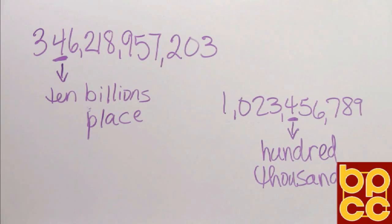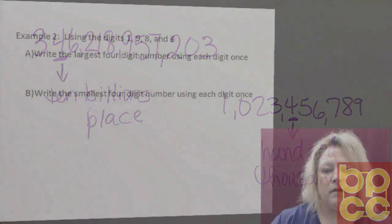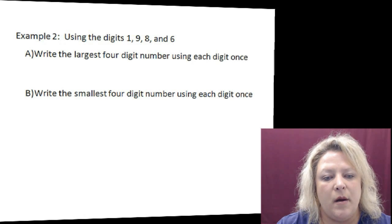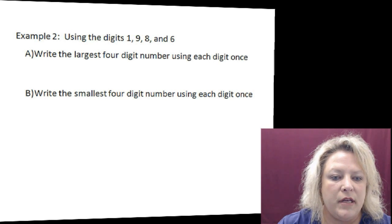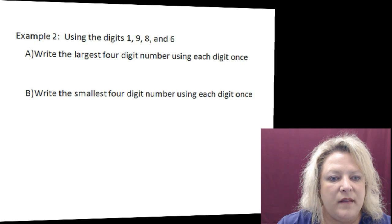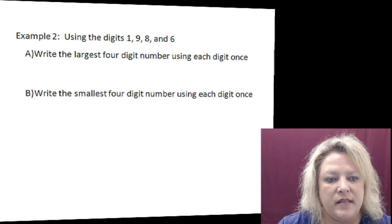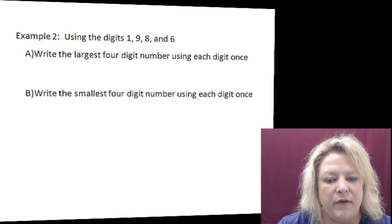Now we are going to write a large four digit number. You can only use the digits one time a piece. And the biggest number would be if you wrote the digits in order from the highest to the lowest, which would be nine, eight, six, one. So if you read that number, it would be nine thousand, eight hundred, sixty one.